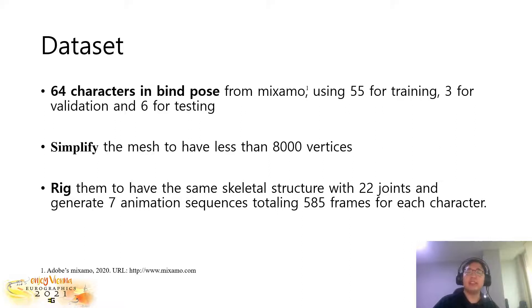For the dataset, we gathered 64 characters in bind pose from the Mixamo website, using 55 for training, three for validation, and six for testing. We simplified the mesh to have less than 8,000 vertices. We then rigged them to have the same skeletal structure with 22 joints and generated seven animation sequences totaling 585 frames for each character.